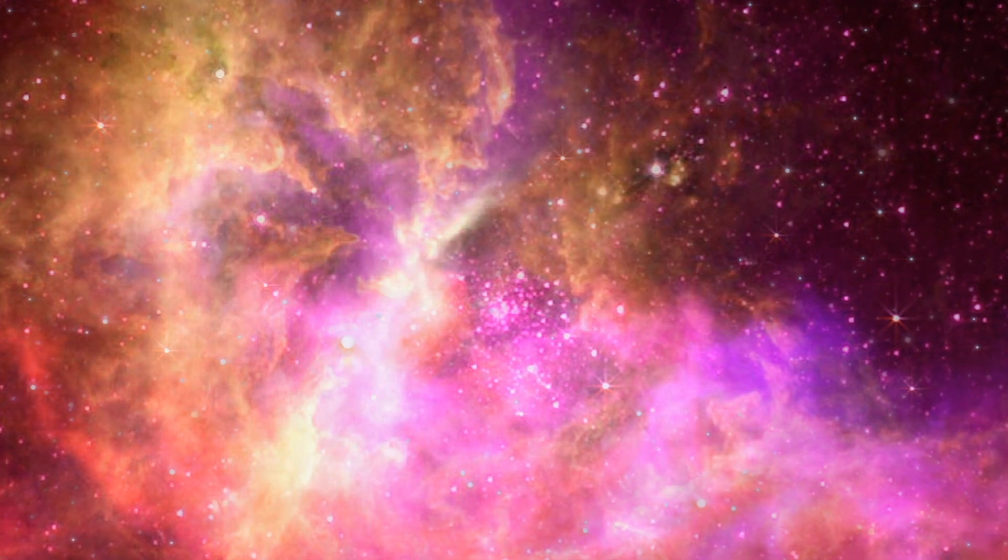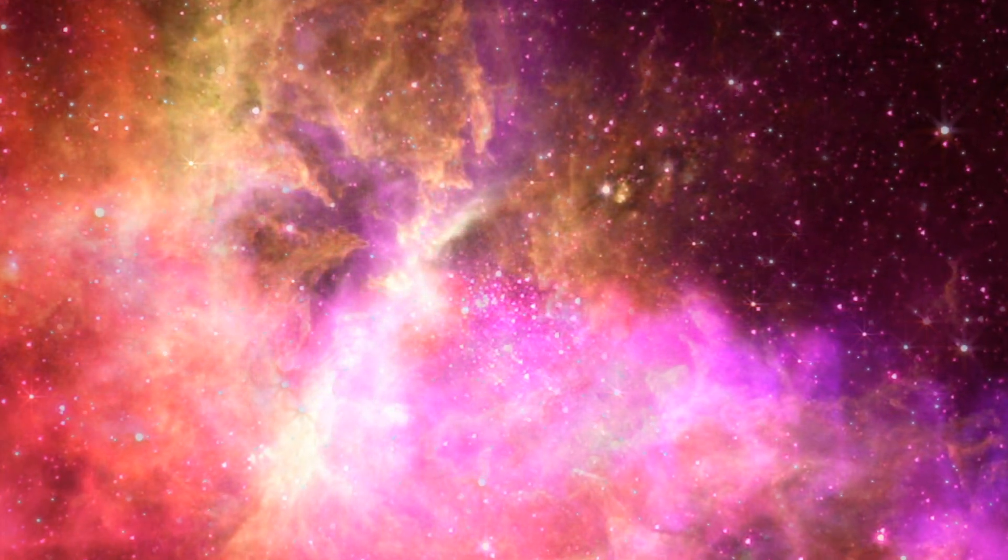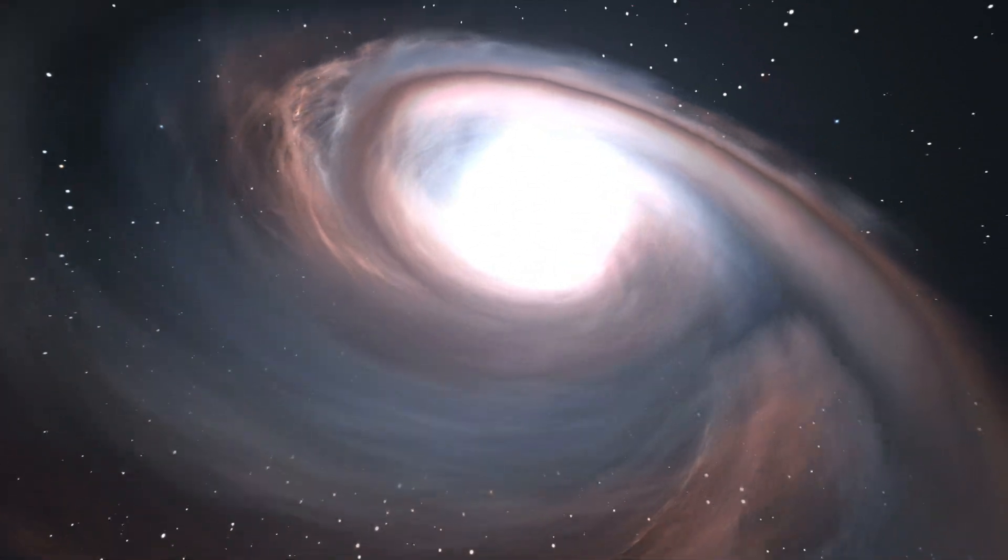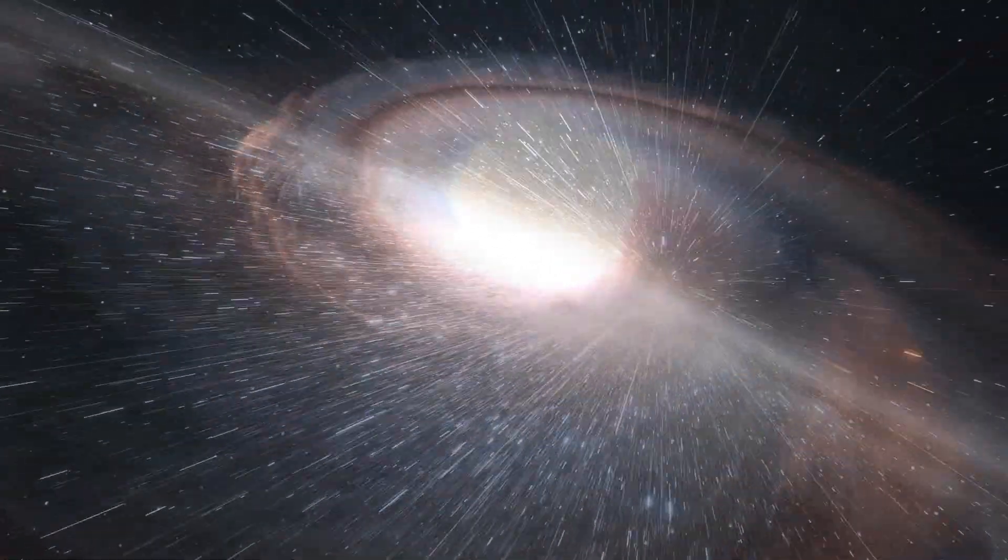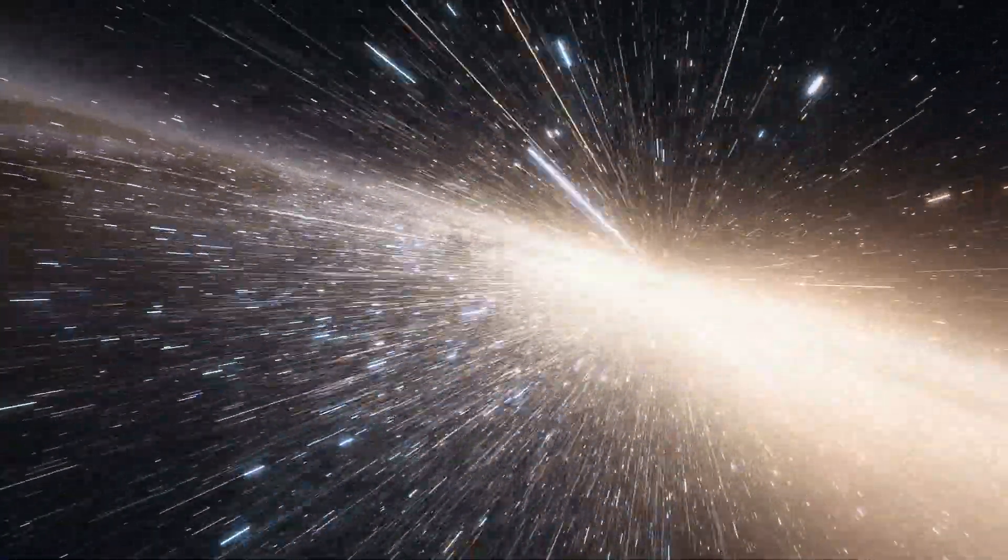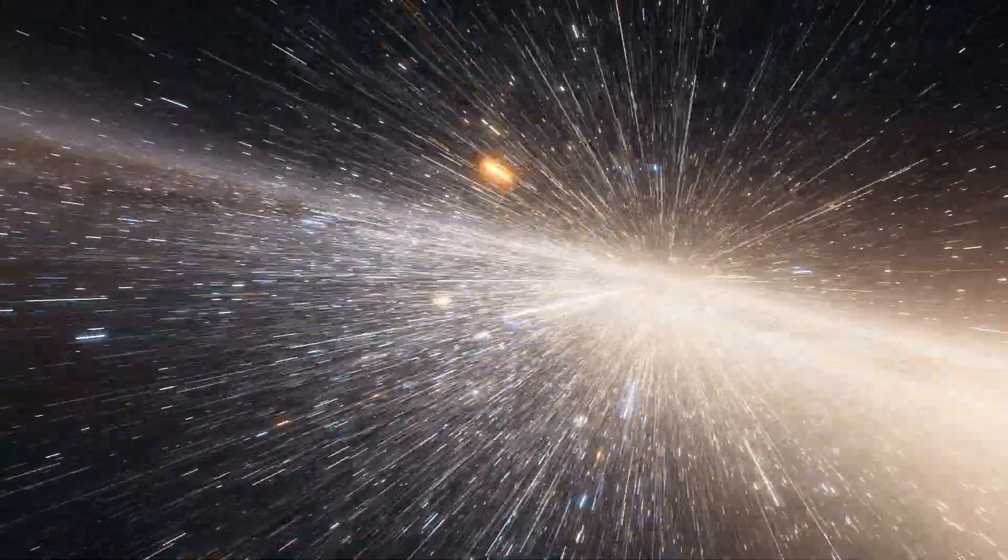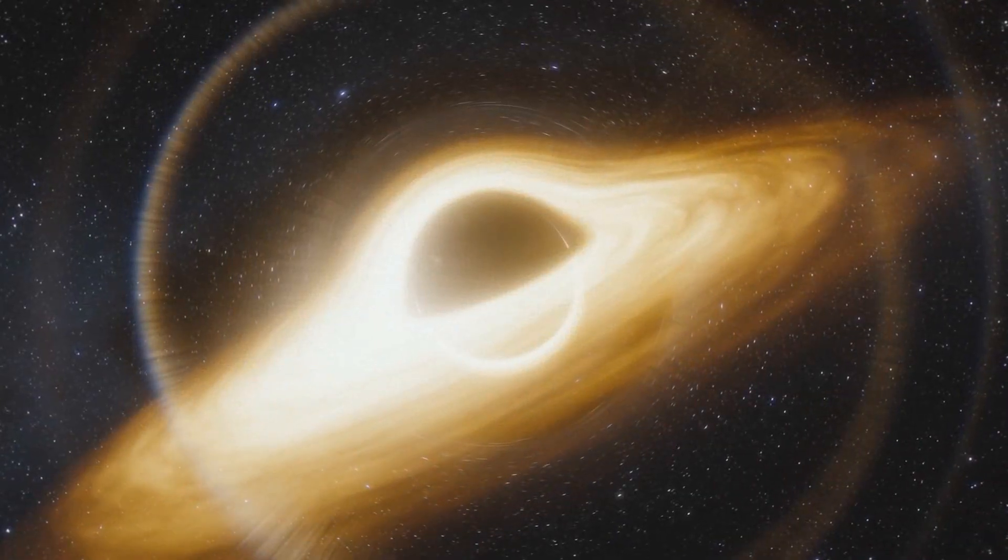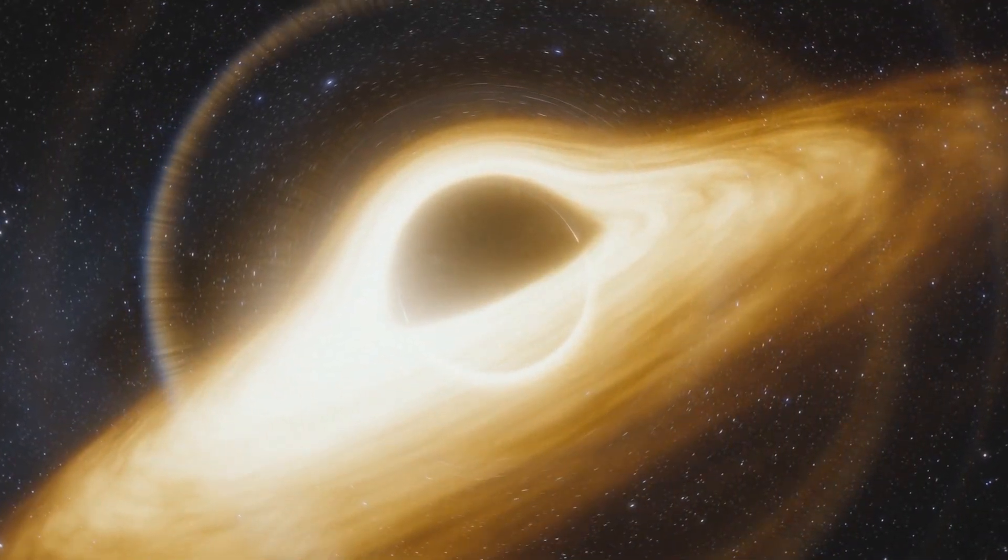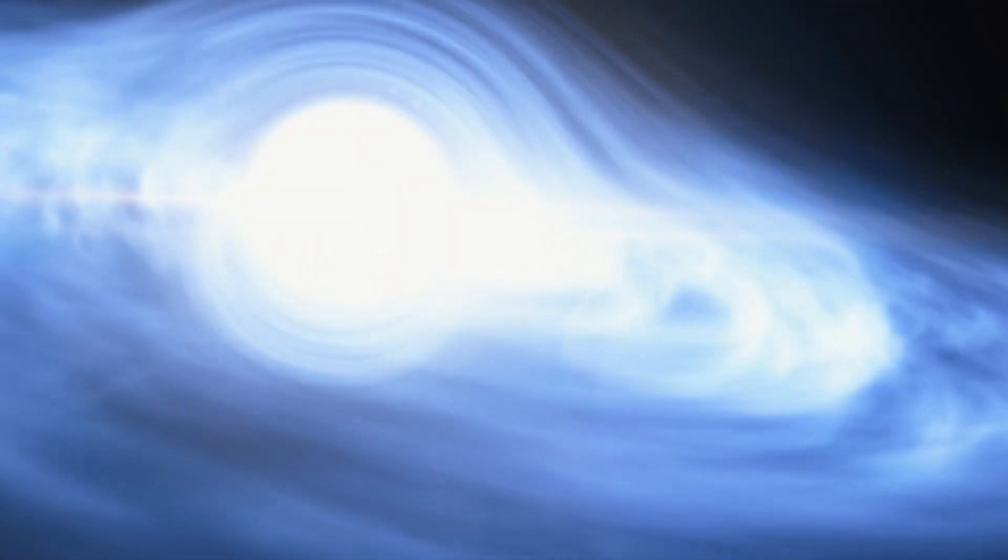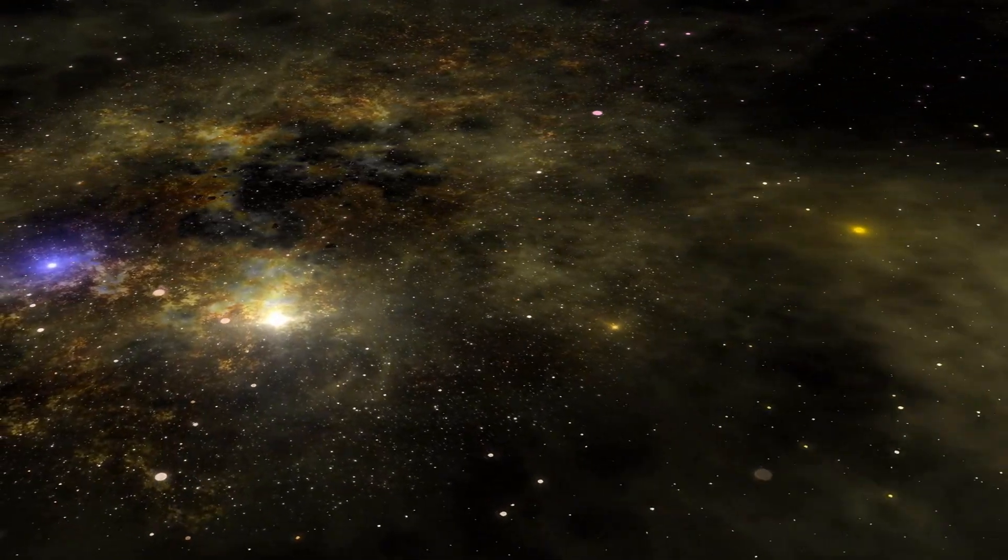Imagine, if you will, a cosmic object that instead of devouring everything that comes near it ejects matter and light, almost like a cosmic geyser. This is essentially what a white hole is thought to be. It's a region of the universe where matter and light spontaneously spring forth. While black holes are like cosmic vacuum cleaners, tirelessly sucking in everything that comes too close, white holes are the cosmic spitballs of the universe, spewing out matter and energy.